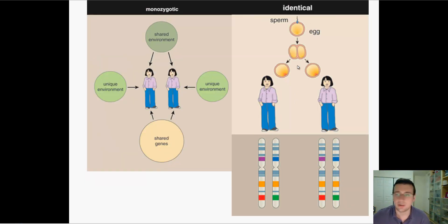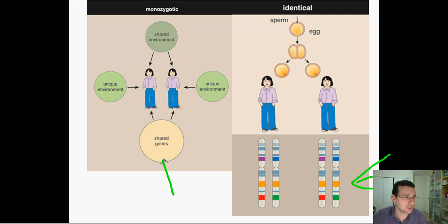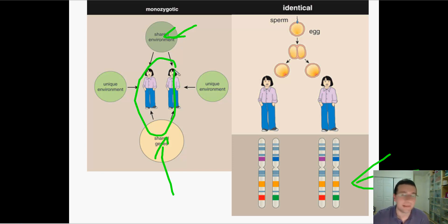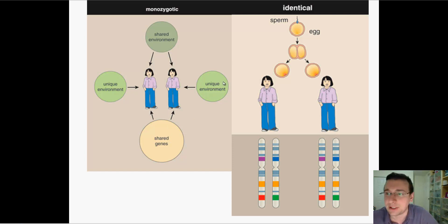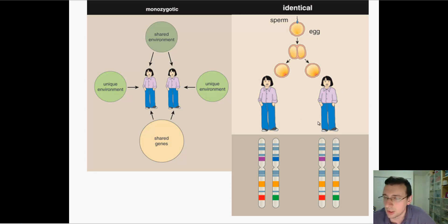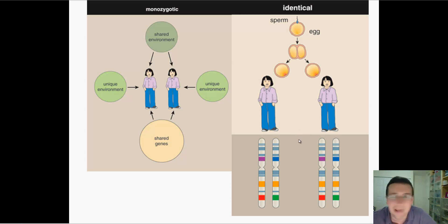Identical twins develop from the splitting of one fertilized egg — one fertilization event — which means they have exactly the same DNA and share 100% of their genes. Theoretically, if they also share environments, they would be exactly the same person. But that doesn't happen because everyone experiences the environment differently. If you analyze two identical twins raised separately in separate environments, everything different between them is theoretically due to the environment. However, it's very hard to have a truly 100% shared environment, because even in the womb they grow in different positions in the uterus. So you can never truly have a shared environment for monozygotic twins.